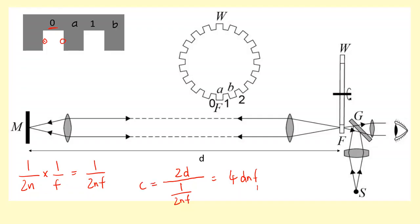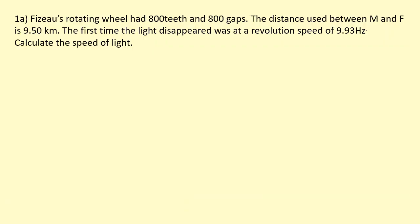So here you need to just note that f here is the frequency at which the light first disappears and it stops flashing. In a particular experiment, Fizeau's rotating lighting wheel had 800 teeth and 800 gaps. The distance between the mirror and the wheel was 9.5 kilometers. The first time the light disappeared was at a revolution speed of 9.93 hertz. So that's basically the frequency at which the light stops flashing. Calculate the speed of light.